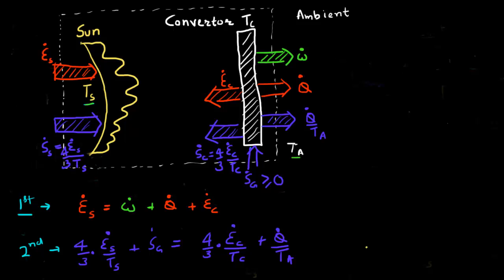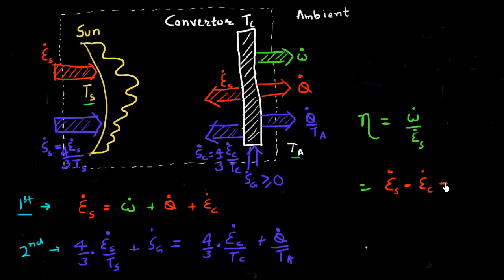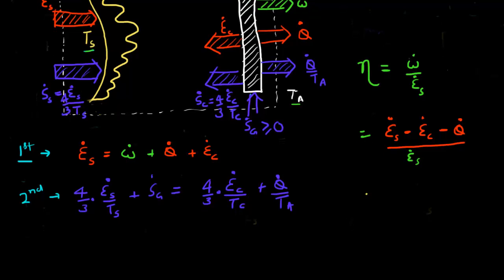I'm interested in finding the overall efficiency of this conversion, which I can represent by η. This is my work divided by the energy coming from the sun. I can make use of the first law and substitute for W, giving η = (E_S - E_C - Q) / E_S, which is essentially equal to 1 minus E_C/E_S minus Q/E_S.